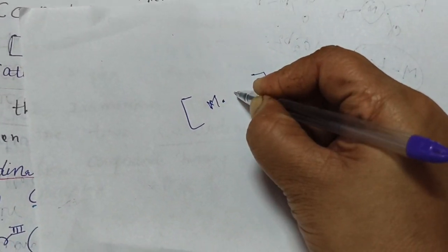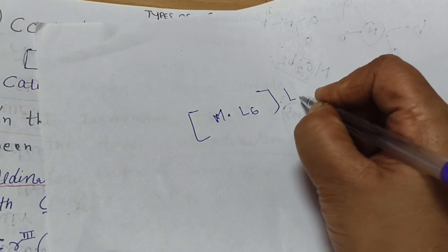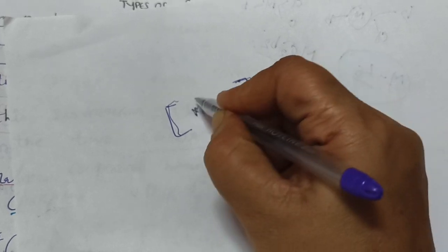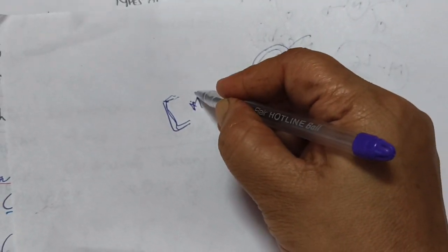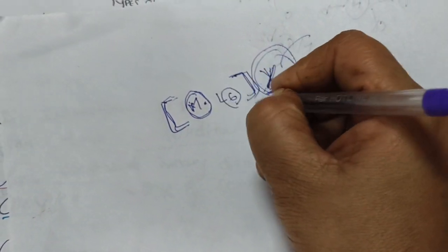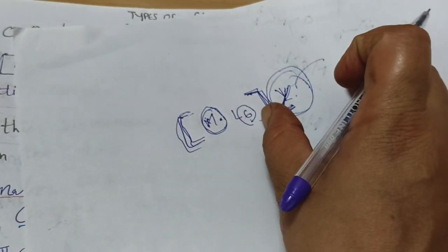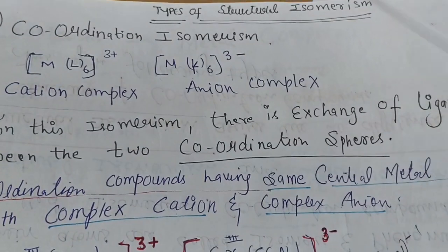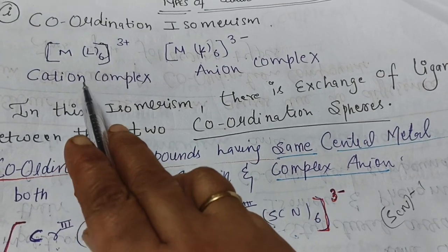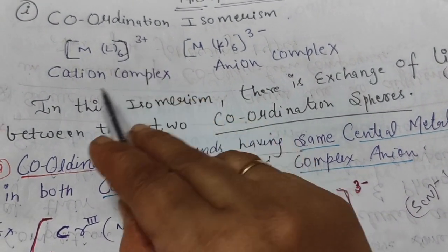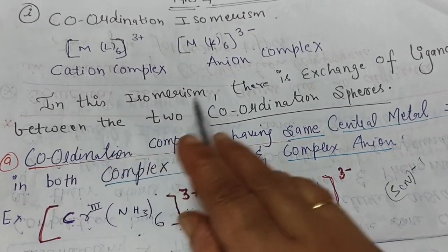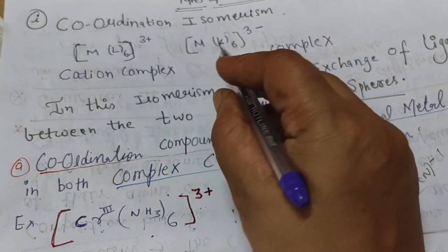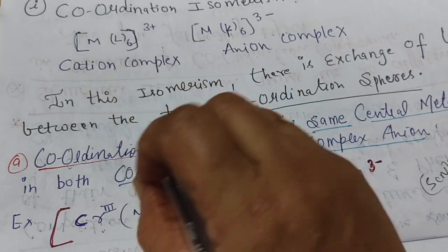To understand coordination isomerism, you should first know what the coordination sphere is. In any complex written with a square bracket, the inside of the bracket is the coordination sphere, and outside is the ionization sphere. Inside the coordination sphere is the central metal atom, and the coordination number is shown as a superscript. In coordination isomerism, we have a cationic complex and an anionic complex. There is an exchange of ligands between two coordination spheres.